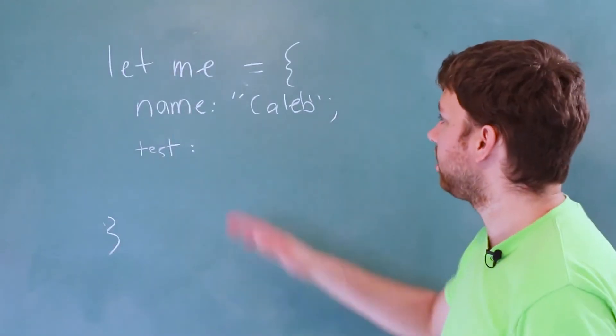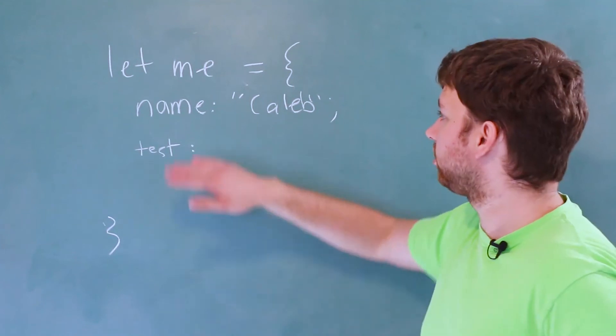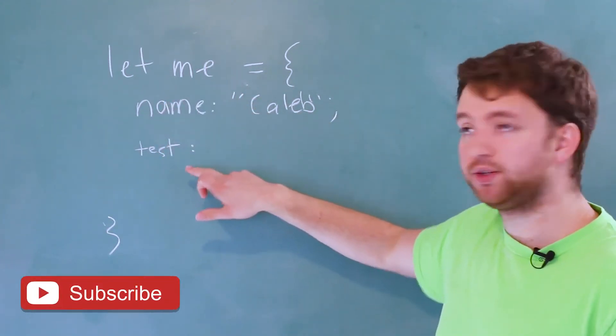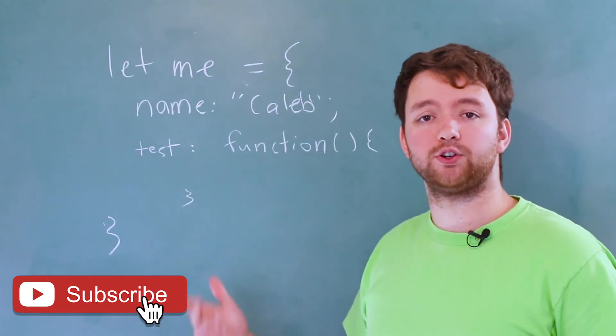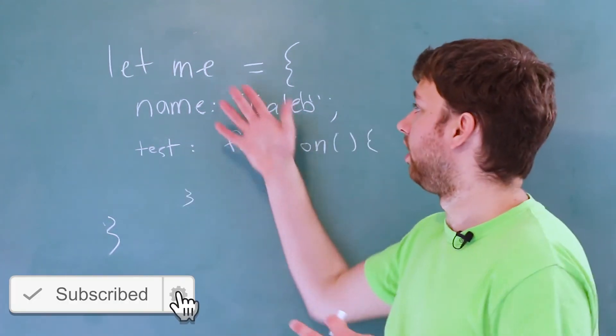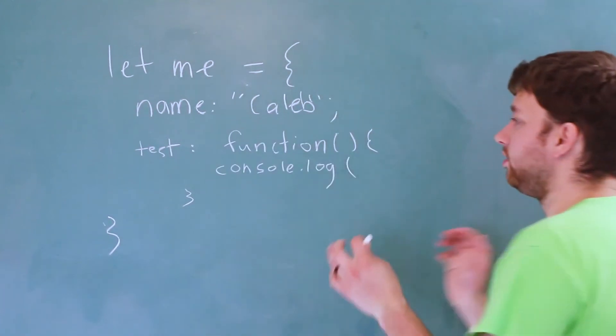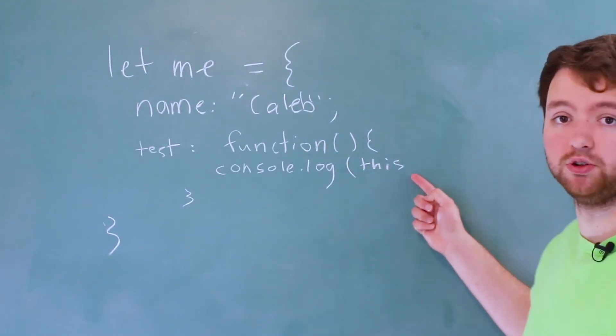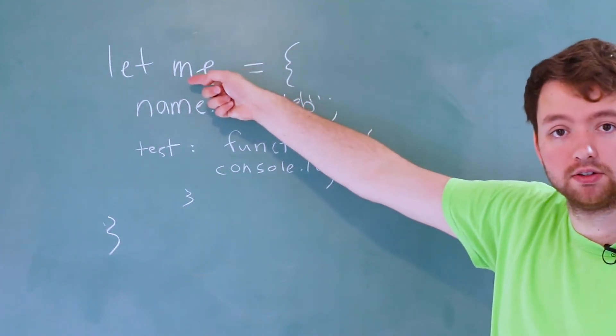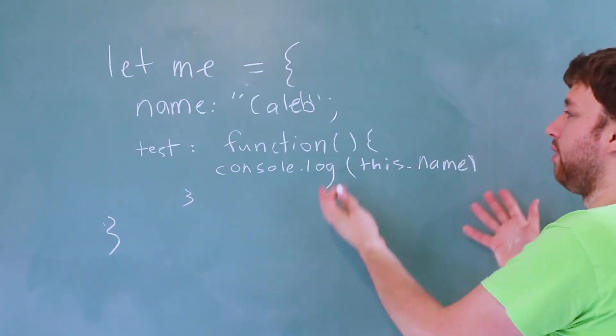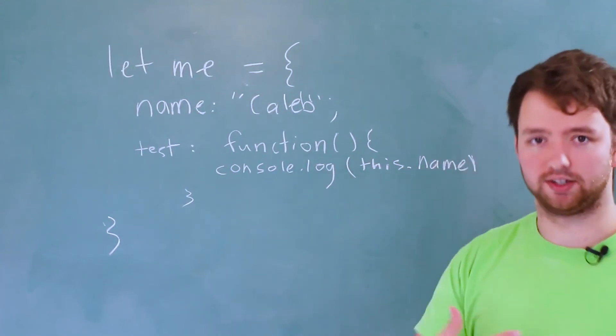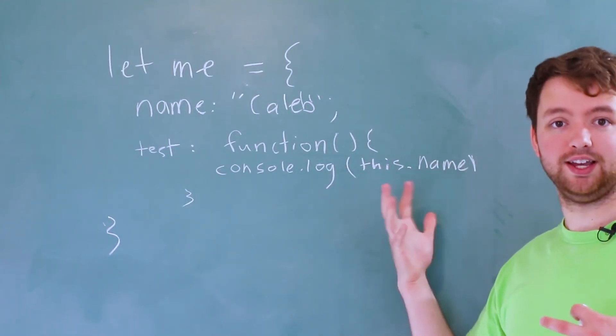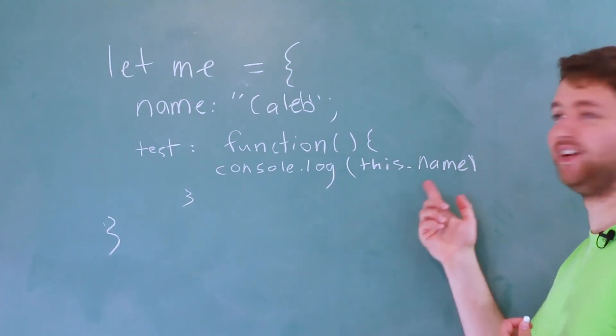So to show you guys this, take a look at this object here. It's an object literal called me. It has a name, which is Caleb. And then we're going to attach a function to it. And let's say inside of this function, we output the value of this person's name. The way we can do that is by saying this, which refers to the object the method is attached to, dot name. And this is how a method refers to the object it's attached to. So when this function uses this in this context, it's like saying myself dot name.